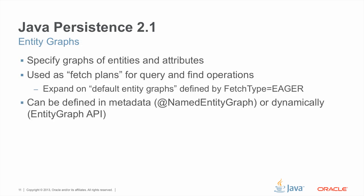Entity graphs, as the name suggests, are used to specify graphs of entities and attributes. These attributes may include other entities themselves and so on down the graph. They're used as fetch plans or fetch graphs for query and find operations — you take the entity graph and pass it as an argument to one of these operations to carefully control what data is retrieved. The entity graph notion basically expands upon what we term default entity graphs defined by fetch type eager in terms of the metadata. Entity graphs can be defined in metadata through the named entity graph annotation or dynamically through the entity graph API.